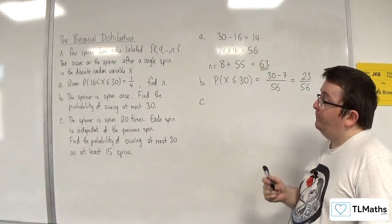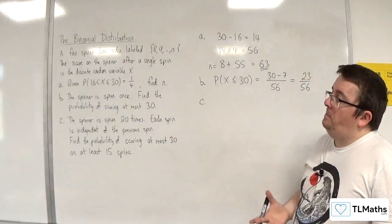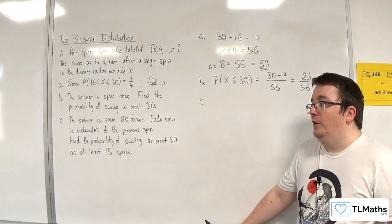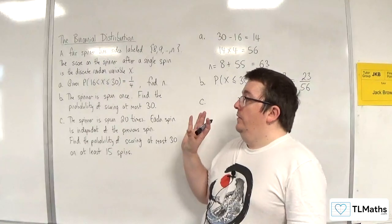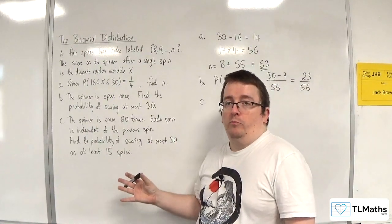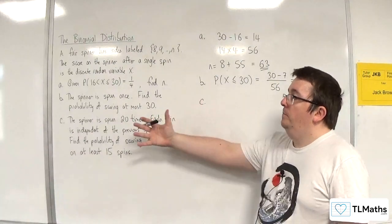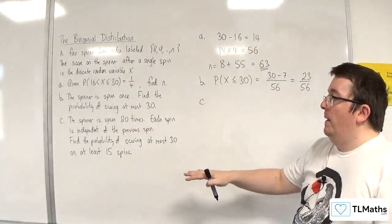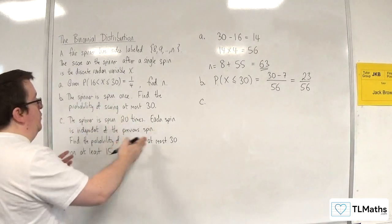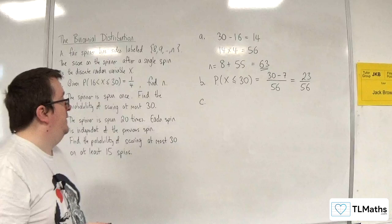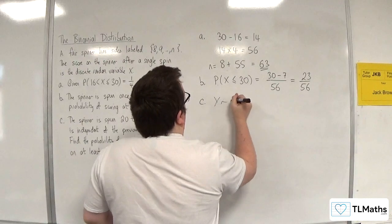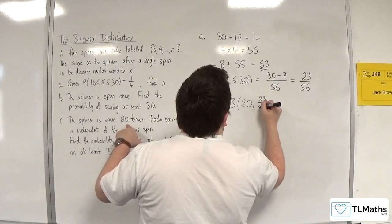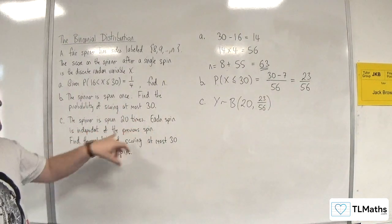Part C: The spinner is spun 20 times. Each spin is independent of the previous spin. Find the probability of scoring at most 30 on at least 15 spins. Now, this has turned into a binomial distribution problem. It's binomial now because we've got a fixed number of trials, which is 20. We've got the probability of success, so the probability of scoring at most 30 we worked out in the previous part. It's 23 out of 56. So we've now got a binomial distribution, let's call it y, where n is 20 and the probability of success is 23 over 56.